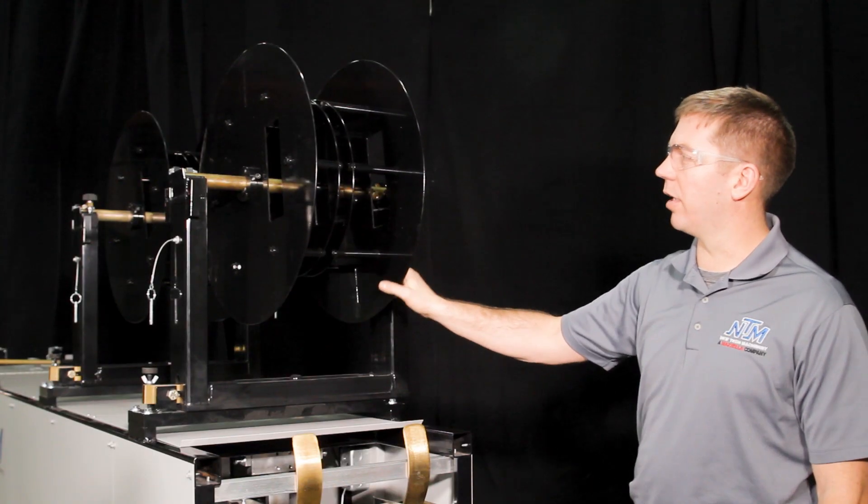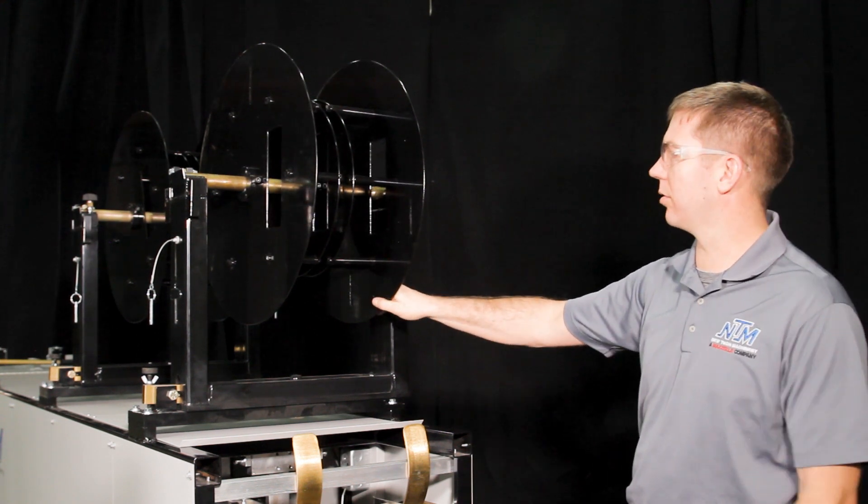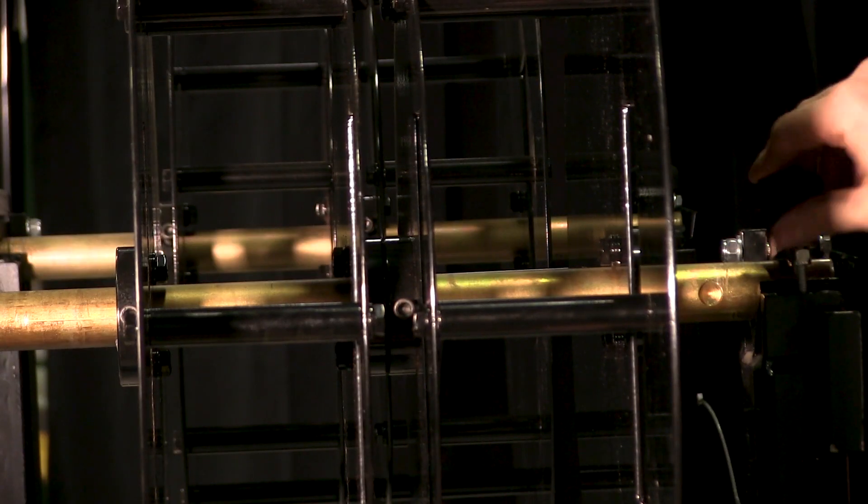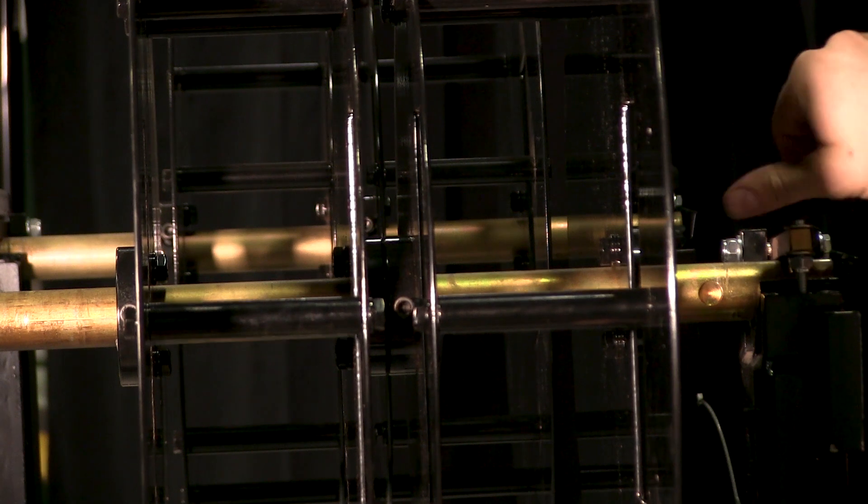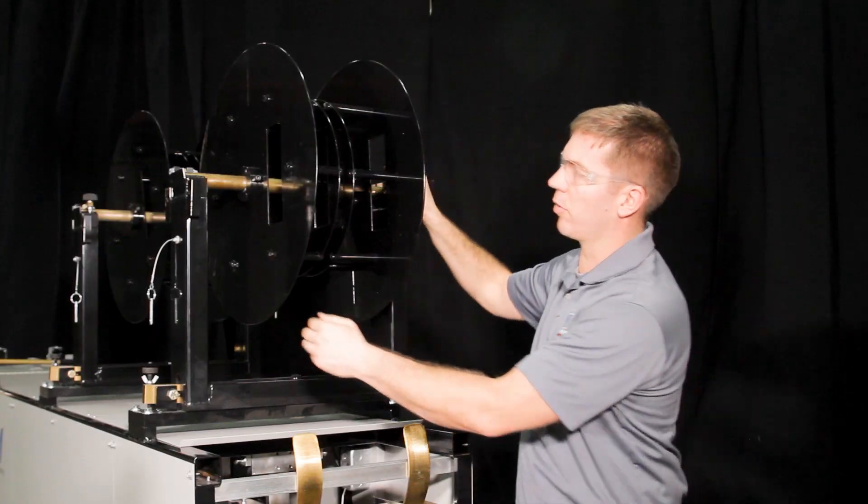Once you have the reel up onto the turnstile you want to flip over the lock down bars and tighten the thumb screws on both sides.